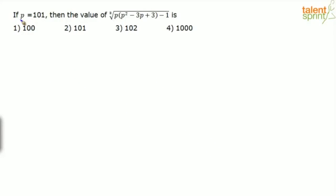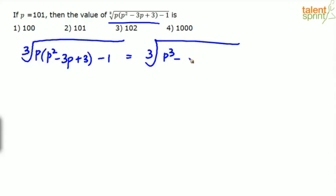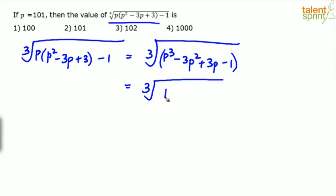Next question: p = 100, find the cube root of p(p² − 3p + 3) − 1. Expand inside: p³ − 3p² + 3p − 1, which is (p−1)³. So the expression becomes the cube root of (p−1)³, which equals p − 1. With p = 100, the answer is 99.